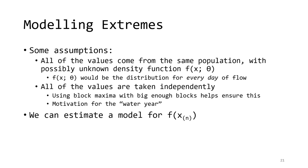When we go to build a model for these block maxima, we have to make some assumptions. First, we assume that all of the maxima are drawn from the same population with some distribution f of x. For annual maximum streamflow, f of x is the distribution of every day of flow in the year. Second, we assume that all of the maxima are taken independently of each other. This is why using blocks is important — if the blocks are large enough, events are spaced out so we can assume independence. This is why water years are divided at the driest part of the year, typically the fall in North America, to maximize the separation in time between subsequent floods.